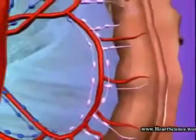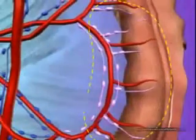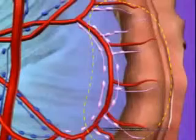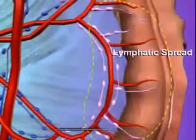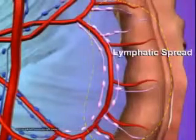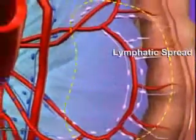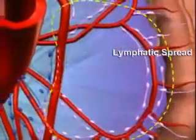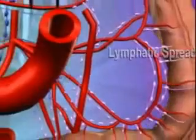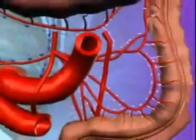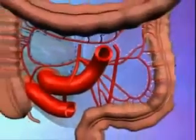A cancerous polyp grows rapidly in size, eventually breaking through the wall of the colon and spreading through the tiny channels called lymph vessels. The cancer can also spread through blood vessels to other parts of the body.